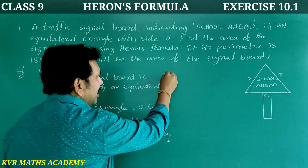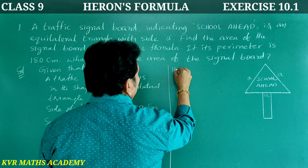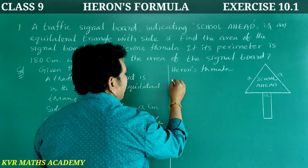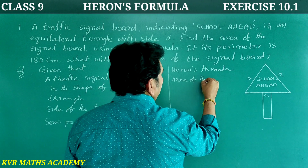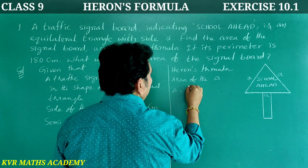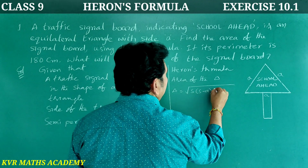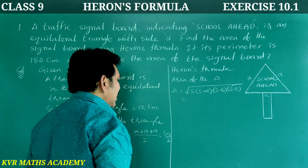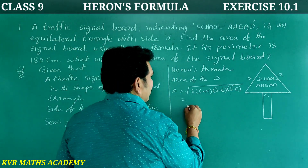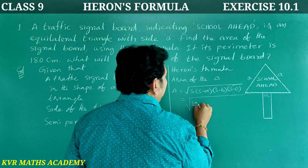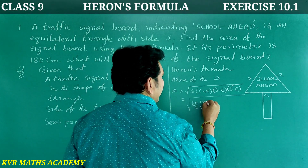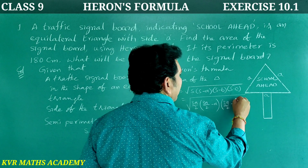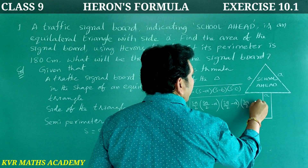Applying Heron's formula: Area equals root of S into (S minus A) into (S minus B) into (S minus C). Here S equals 3A by 2, so this becomes root of (3A/2) into (3A/2 minus A) into (3A/2 minus A) into (3A/2 minus A). Each term (3A/2 minus A) simplifies to A/2.